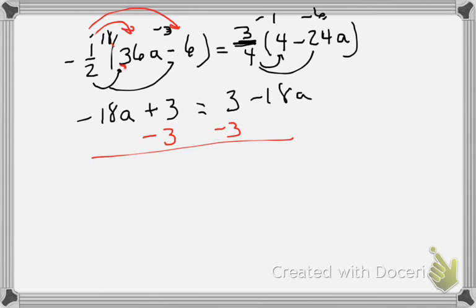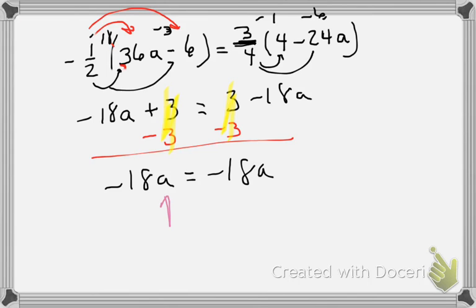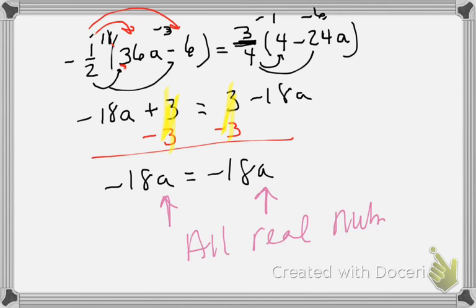This becomes a zero pair, and this also becomes a zero pair. So it looks like this may be one of those special cases — I've got negative 18a equals negative 18a. We can stop here because they're the exact same thing. So no matter what number I put in for a, it will work. In this case the answer is all real numbers.